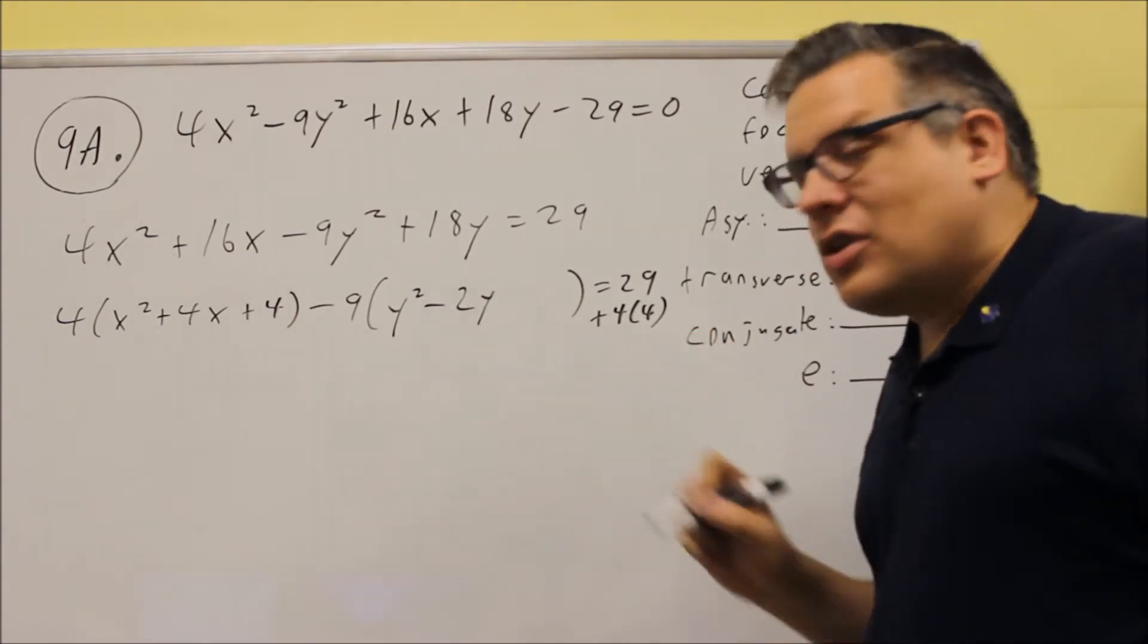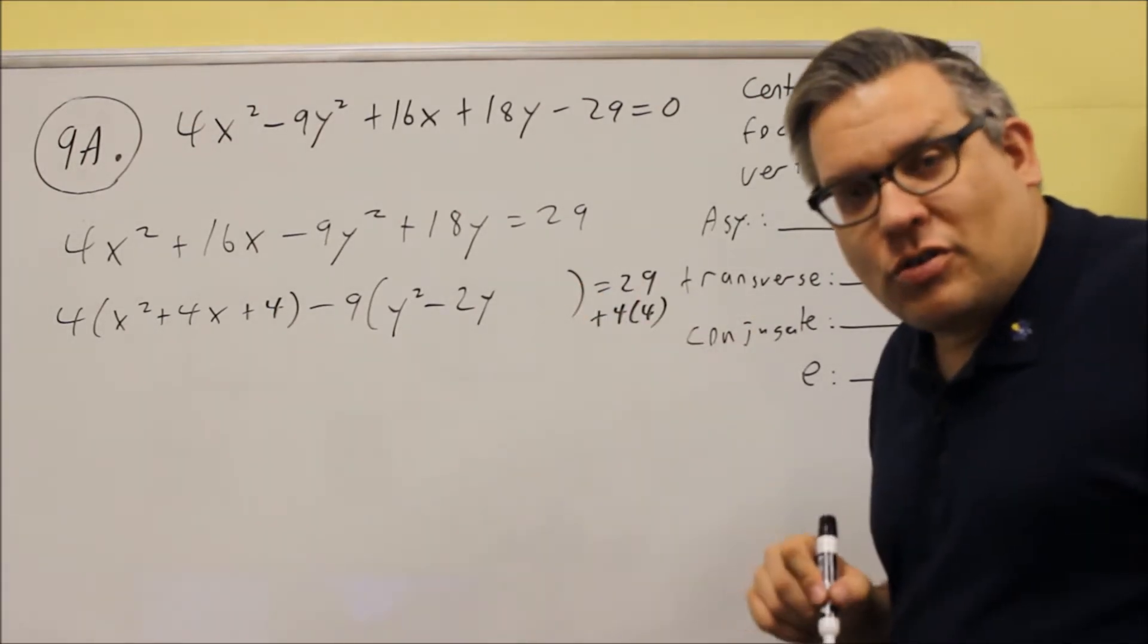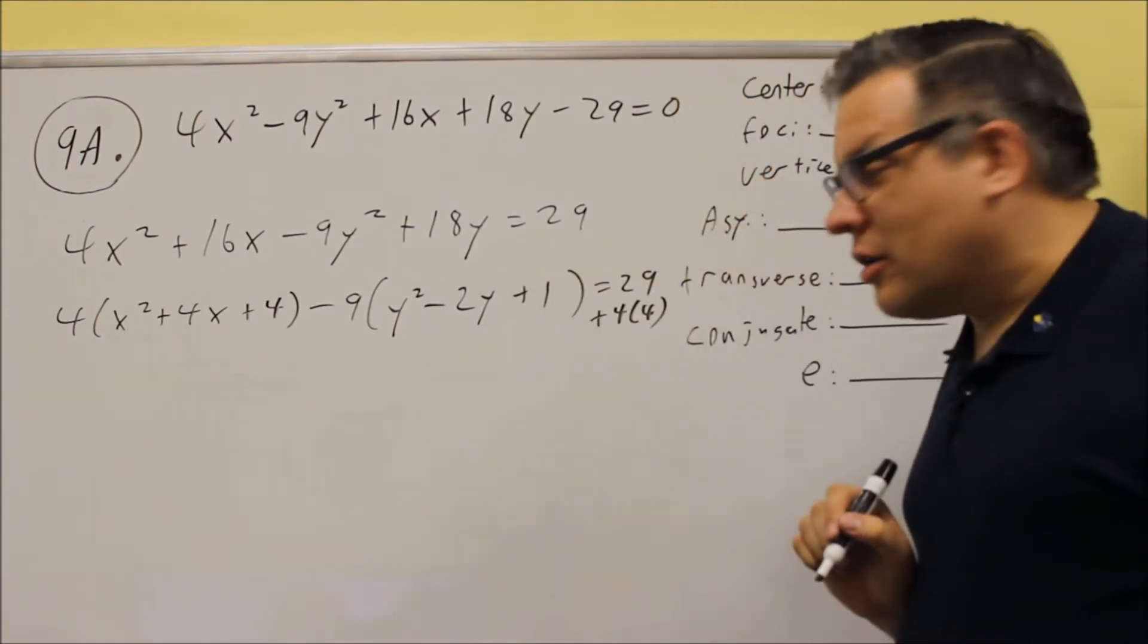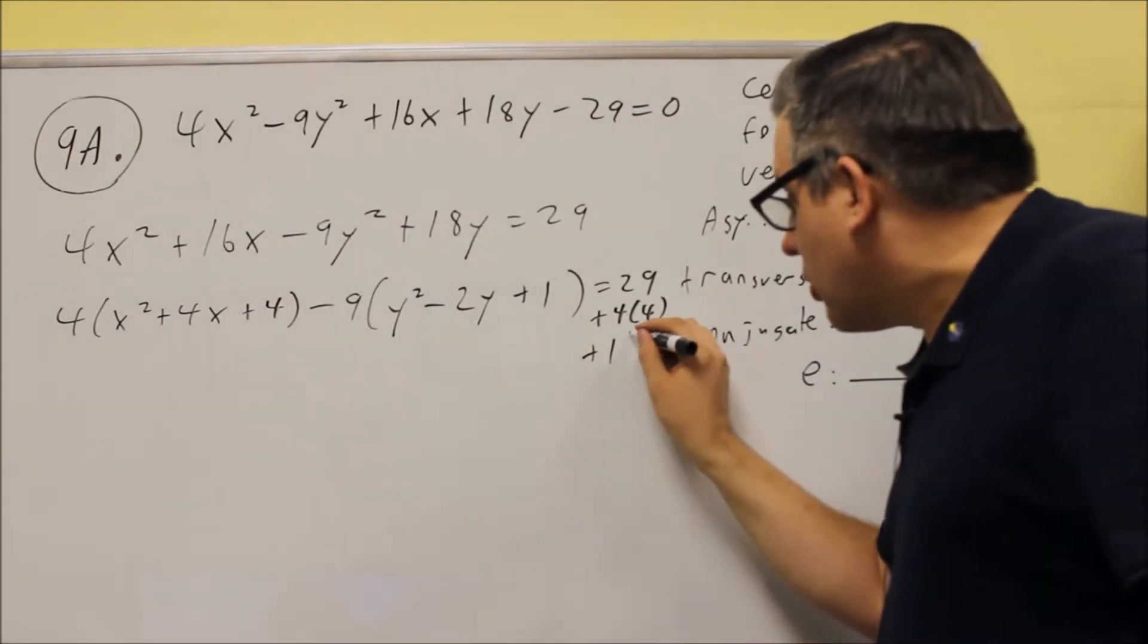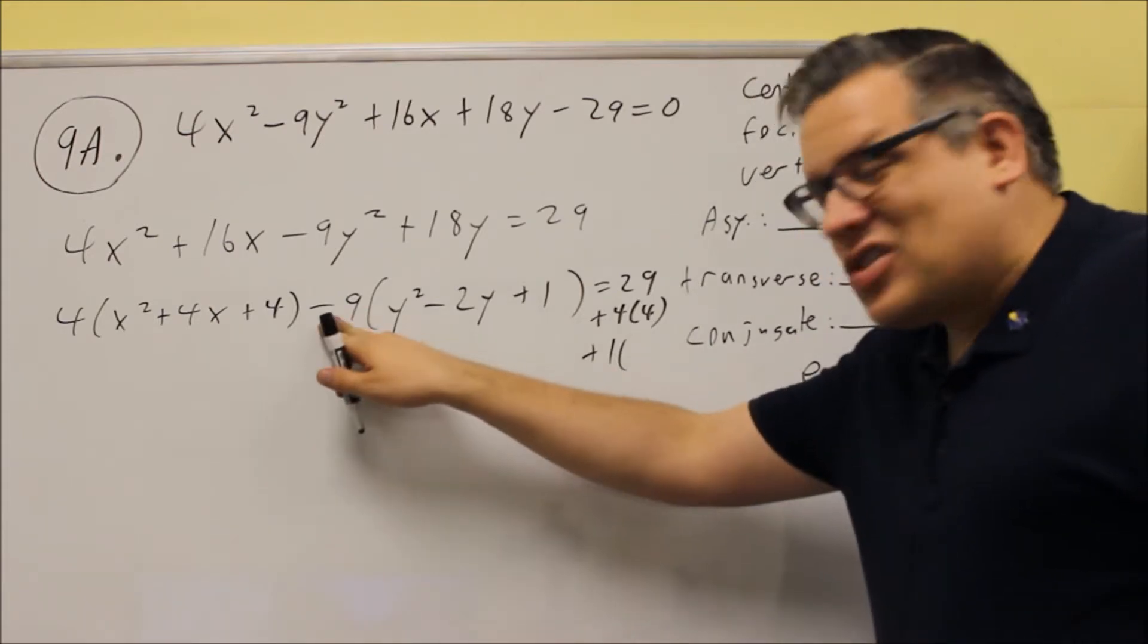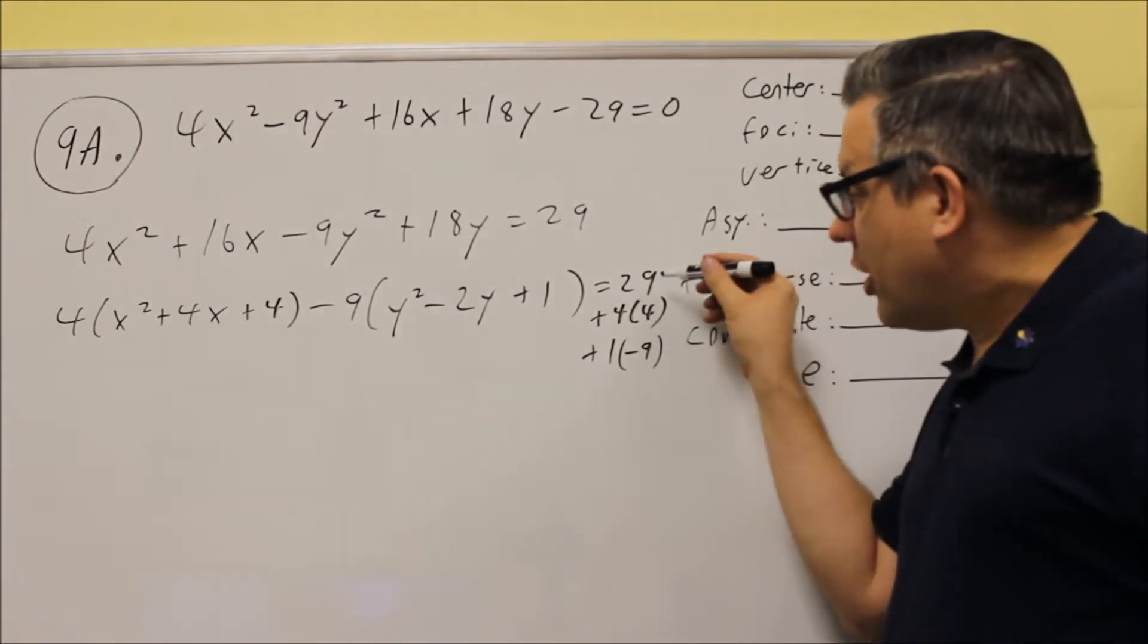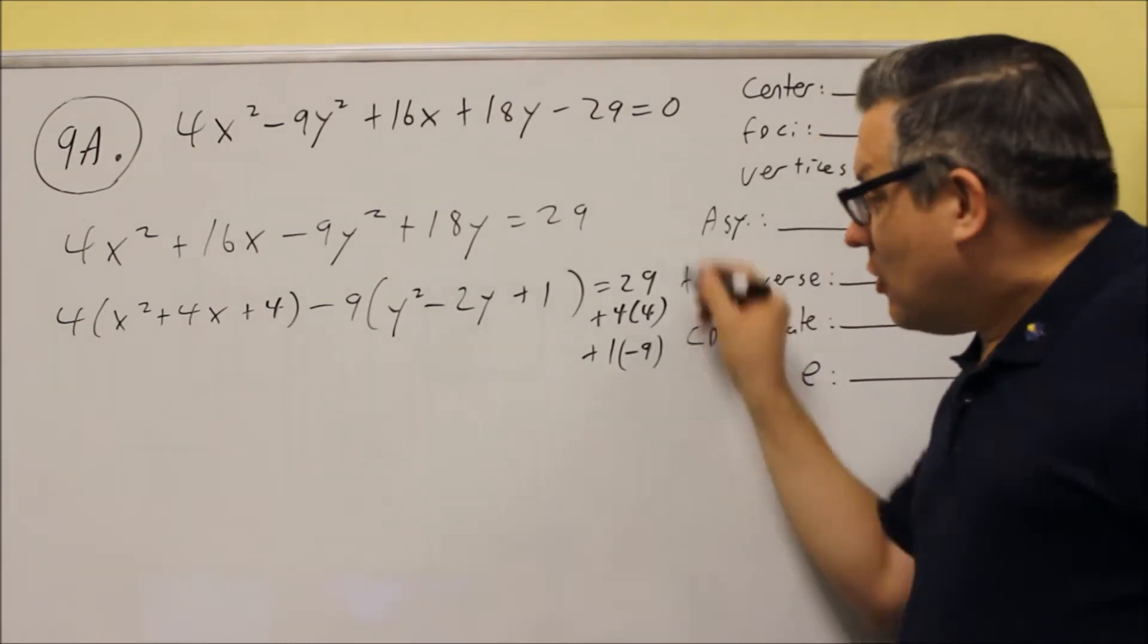Next, we're going to do complete the square with the negative 2. We want to take negative 2, divide it by 2. We get negative 1. Then we square negative 1, and you get a plus 1 here. We're going to add a plus 1 here as well, but remember, multiply by whatever you have outside the parentheses. If it's negative, we need to take that sign with it. So on this side of the equal sign, we're going to take 29, and we're going to add 16, and then we're going to subtract 9.